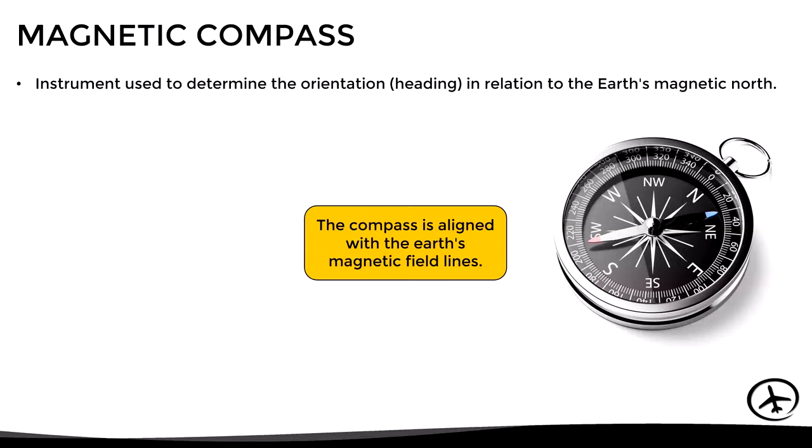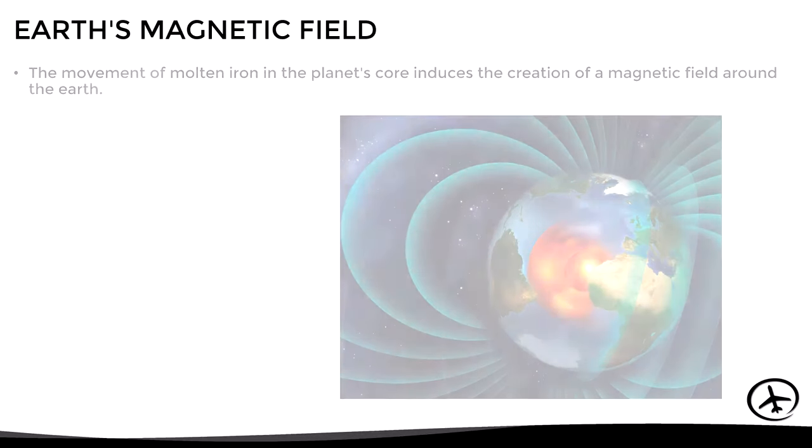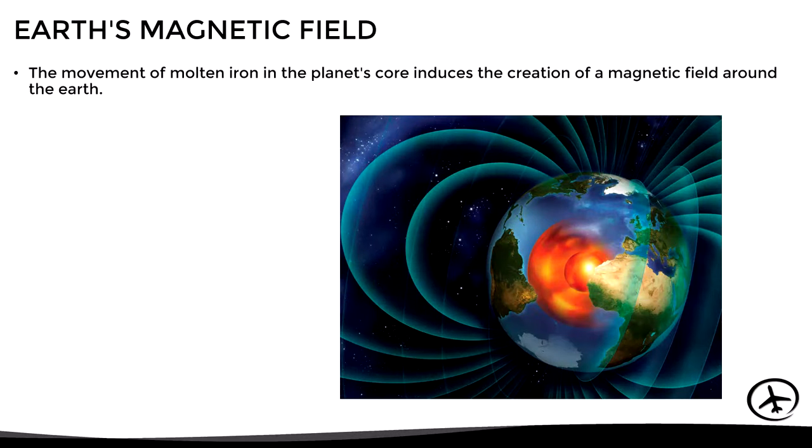There are different designs and presentations of the compass depending on its purpose, so in this video we will deal with the most commonly used design in aircraft. But before going into detail with this, let's see what exactly is the earth's magnetic field. The movement of molten iron in the planet's core induces the creation of a magnetic field around the earth.